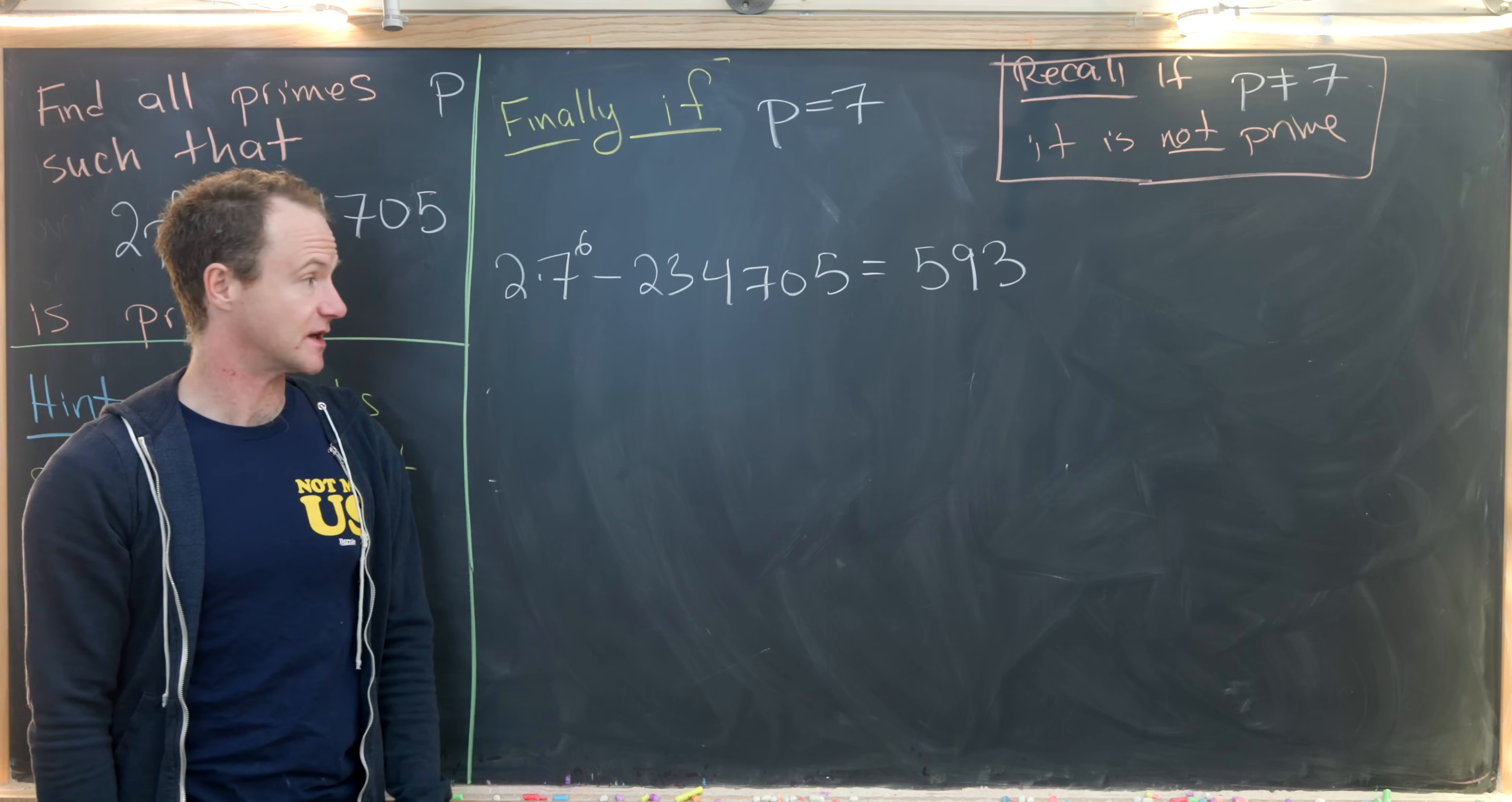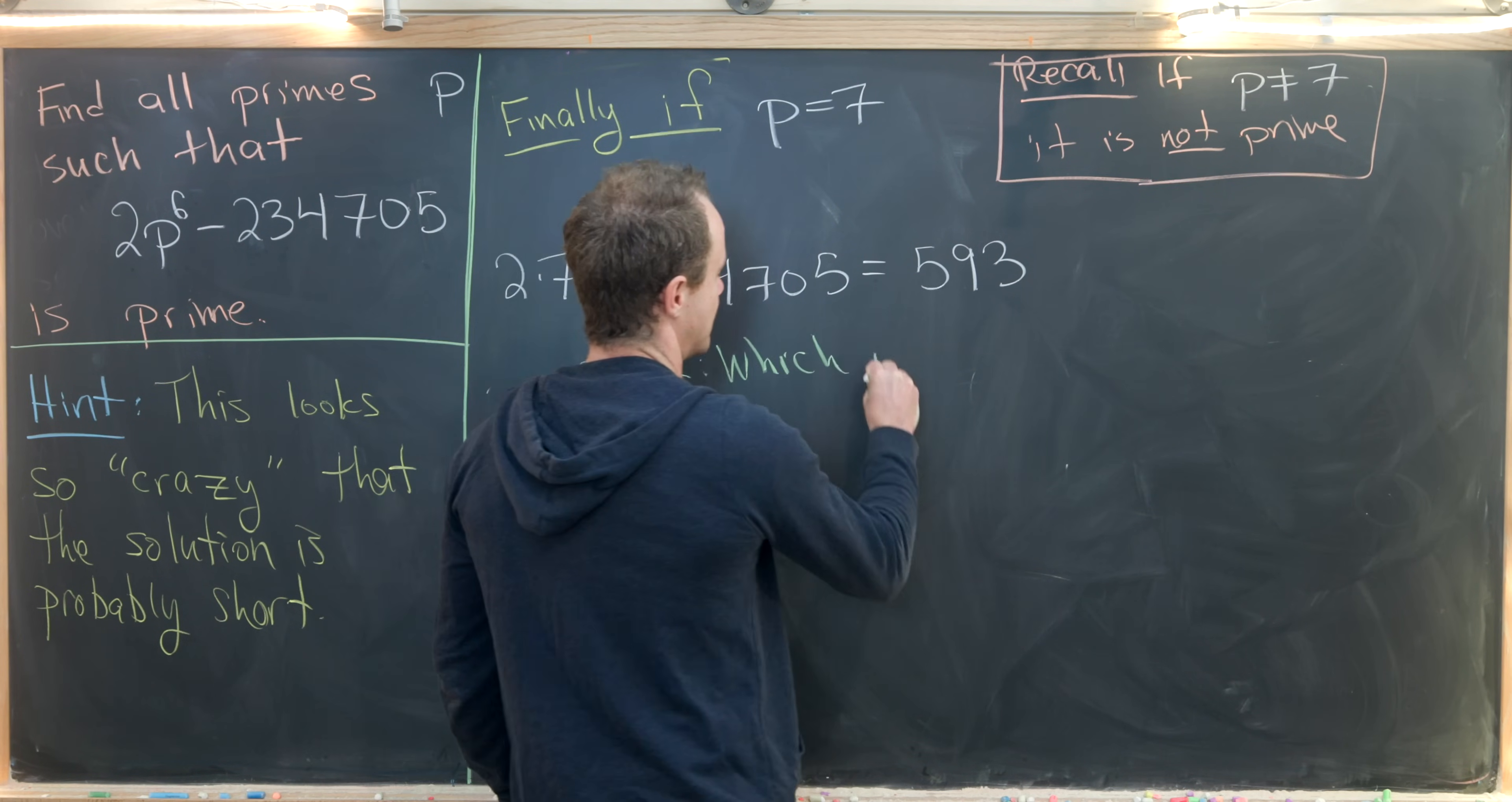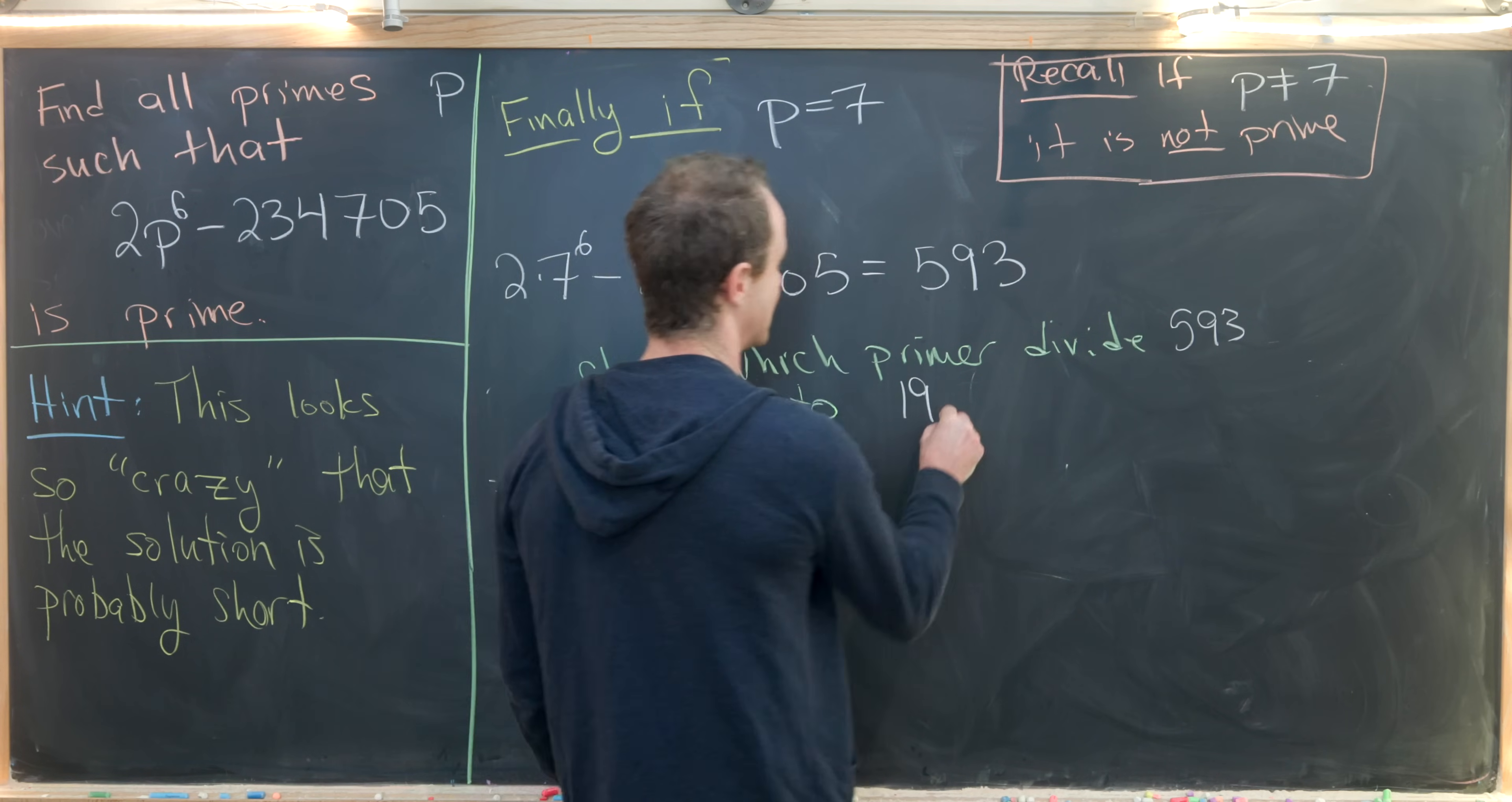And that may seem a little bit daunting. But we only have to check up to the largest prime, which is smaller than the square root of 593. So just to put that into perspective, all we need to check is which primes divide 593 when we're just looking at primes up to, like I said, the largest prime, which is smaller than the square root of 593. And I think that's the number 19.